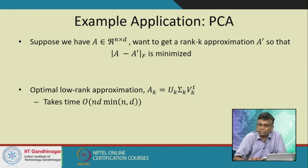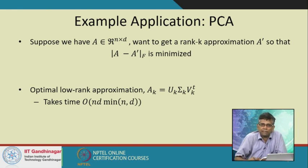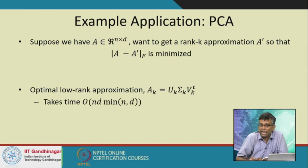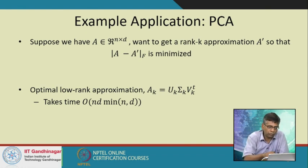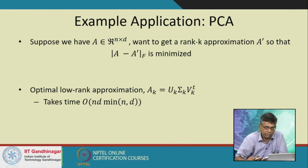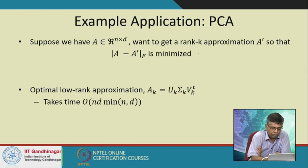Now let us look at a specific application of random projection. Suppose we have a matrix A ∈ ℝ^{n×D} and we want a rank-k approximation — note this k is a local variable, not the same as the projection dimension. We want a rank-k approximation A′ such that ‖A − A′‖_F is minimized, where the Frobenius norm squared is defined as the sum over all entries of (A − A′)_{ij}².